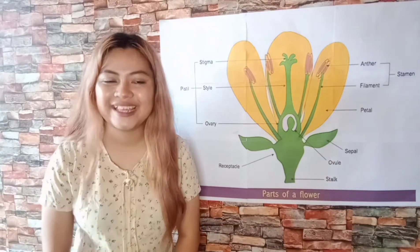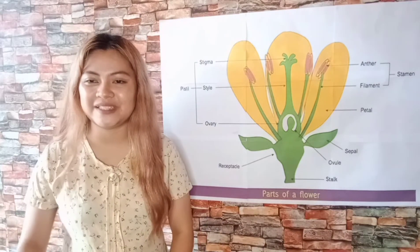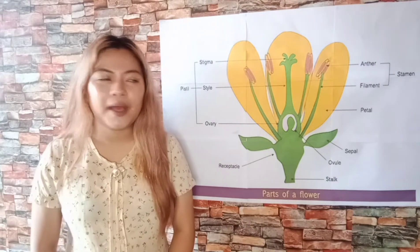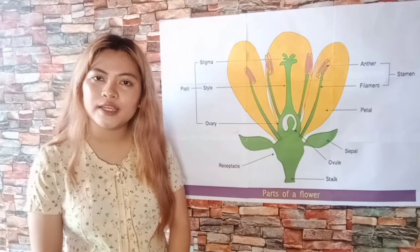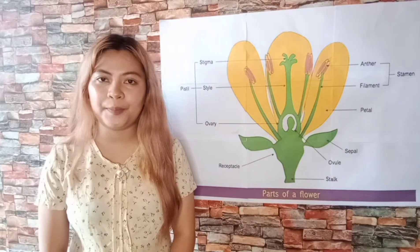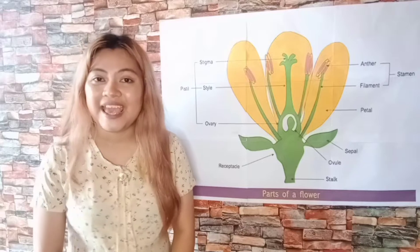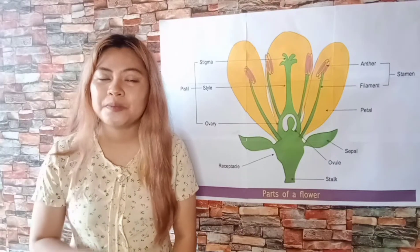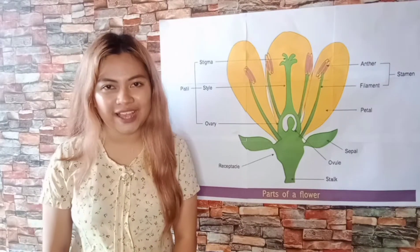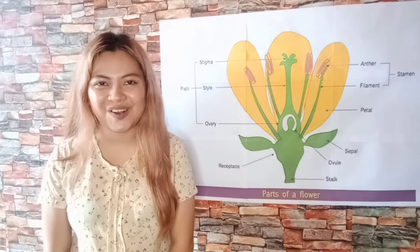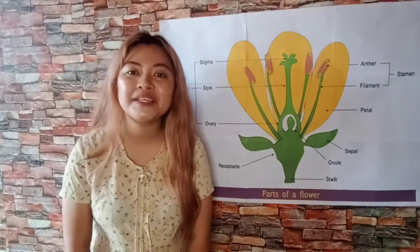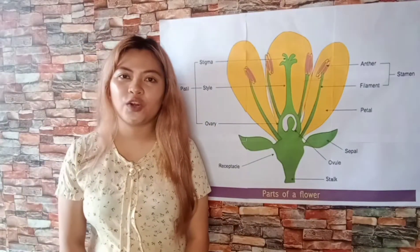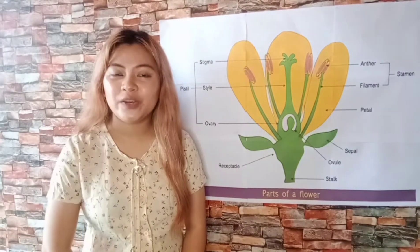Why is it that petals have different colors and are very pleasing to the eyes? It is because the main function of petals is to attract bees and butterflies, which helps in pollination. Collectively, these petals are called the corolla.